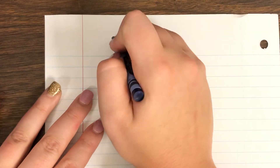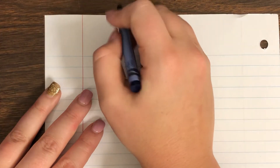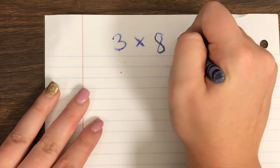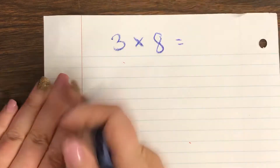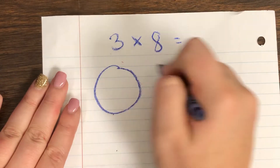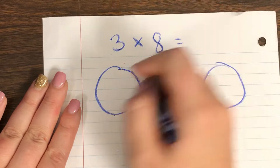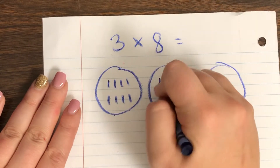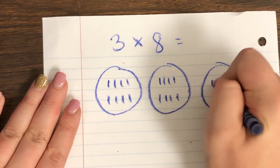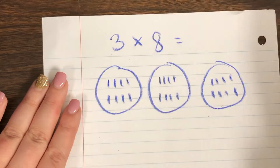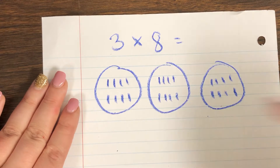Let's try a little bit more complex one: three times eight equals — we don't know. So we're going to start out by drawing three groups of eight. We put eight in each group across all three groups. Now we can count up the marks to figure out our answer.